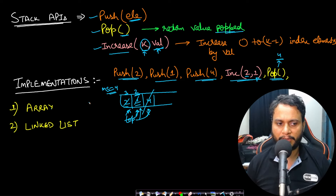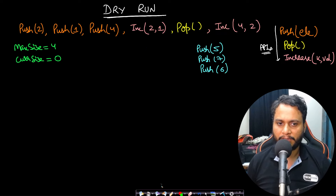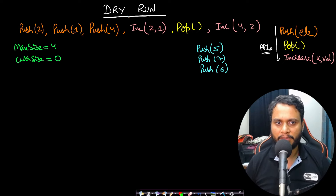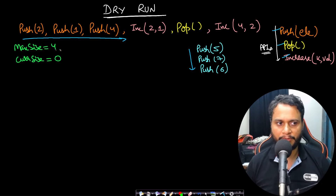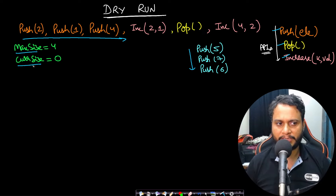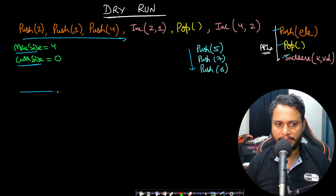We'll go with the dynamic array implementation as it is easier to write. In this dry run, we perform operations left to right implementing push, pop, and increment k value. Our maximum stack size is 4, and we track the current size which starts at 0 because the stack is empty. The top pointer is minus 1 initially.